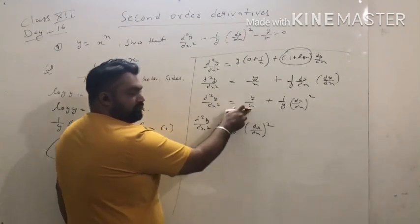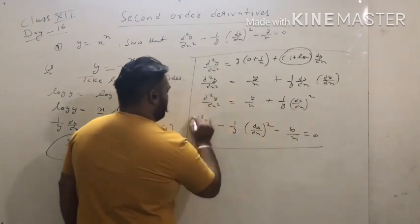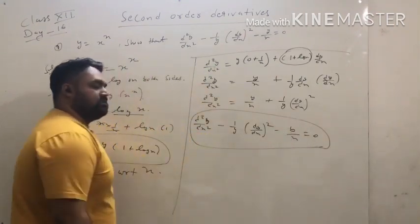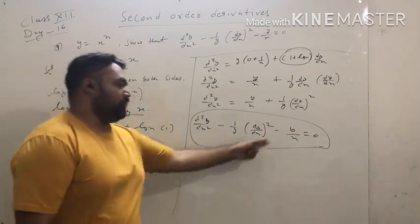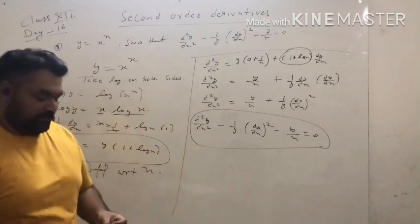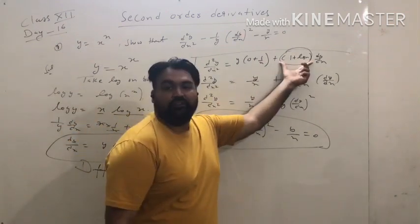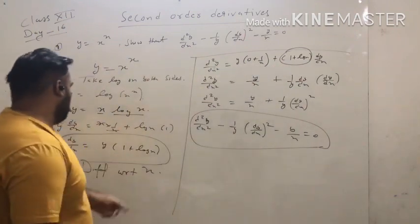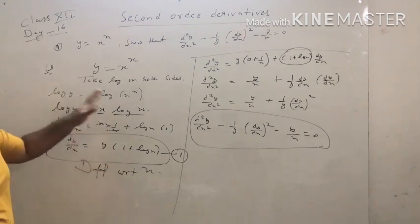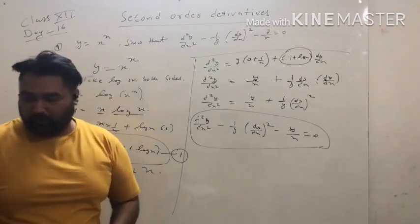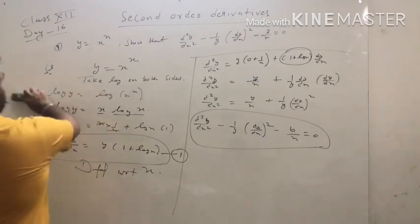Shift terms to the left side: d²y/dx² − (1/y)·(dy/dx)² − y/x = 0. Hence we proved the given equation equals 0. The important point in this question is to substitute the value of (1 + log x) from the first derivative equation.